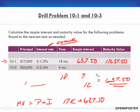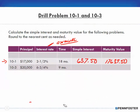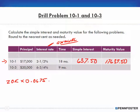Now for problem 10-3, it's basically the same steps. I have $20,000, and I'm multiplying that by 0.0675 — that's six and three-quarters percent in decimal form — and multiplying that times 9 months over 12, because the rate is annual, so we divide by 12.